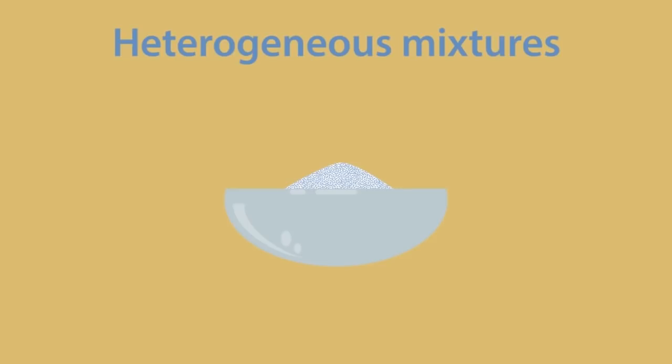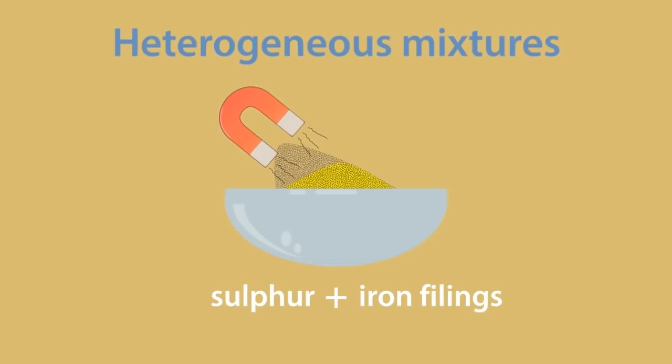If we have a mixture of sulfur and iron filings, we can easily separate this mixture with a magnet. The magnet will remove all of the iron filings, leaving behind the yellow sulfur powder.